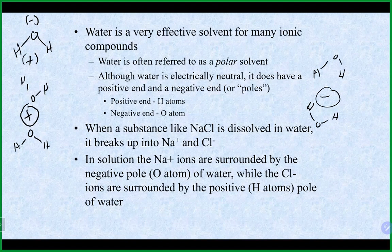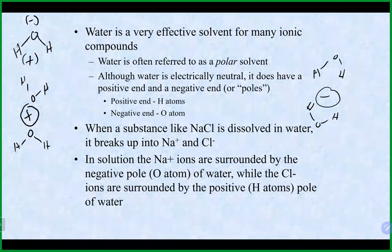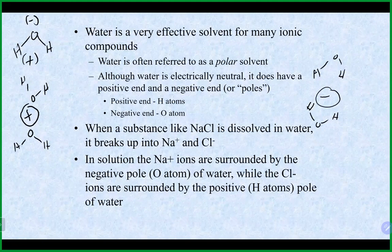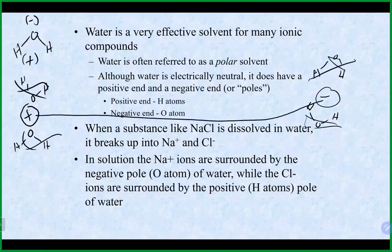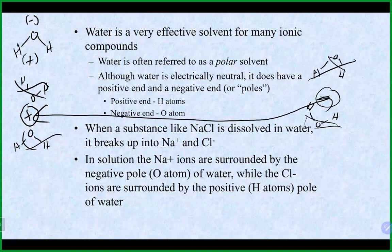We demonstrated this early in the semester — if you evaporate the water off a sodium chloride solution in an evaporating dish, you're left with the solid ionic compound again. The water works well because its positive and negative sides interact with those ions, allowing them to separate from each other and dissolve. Heating the solution evaporates the water and allows the ions to come back together, and you'd see that solid reappear.